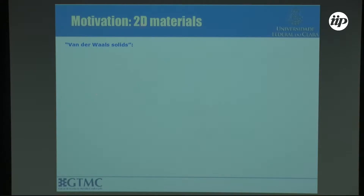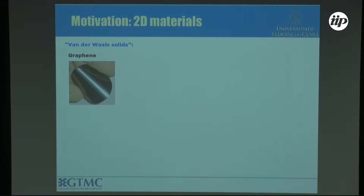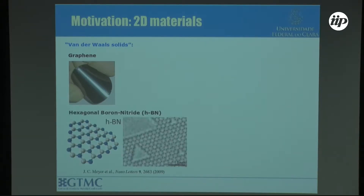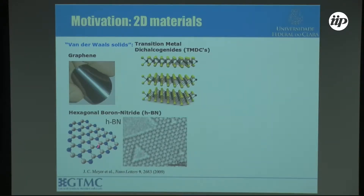This is a 2D materials meeting, so I don't need to advertise the idea too much. We know it started in 2004 when people could exfoliate a single layer of graphene and realized it's possible to have a stable 2D crystal. Then in 2009, they started discussing boron nitride because it also has layers with Van der Waals interactions between them, so you could get a 2D material from it. In 2010, they realized it's possible to get monolayer transition metal dichalcogenides — three layers of atoms, but essentially a single layer — and this one is a semiconductor.